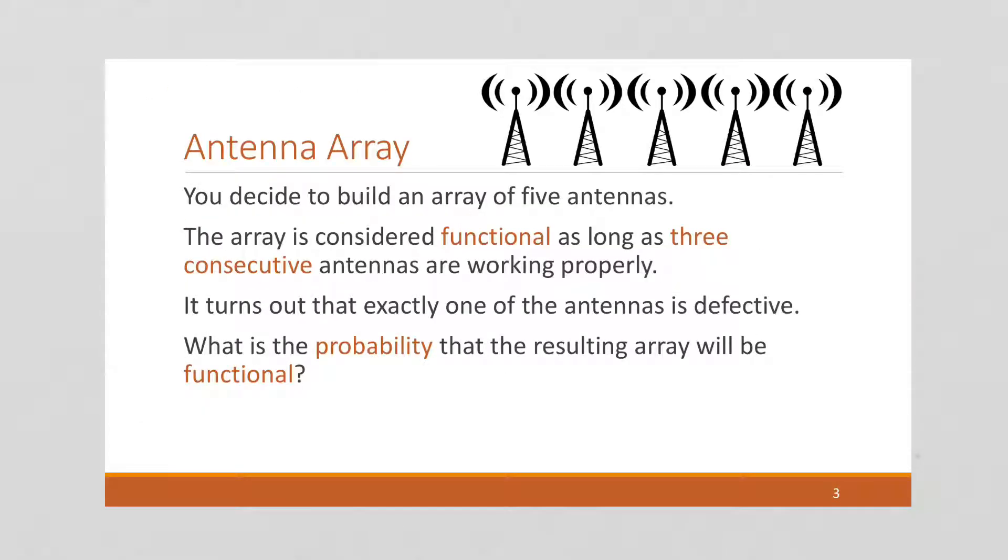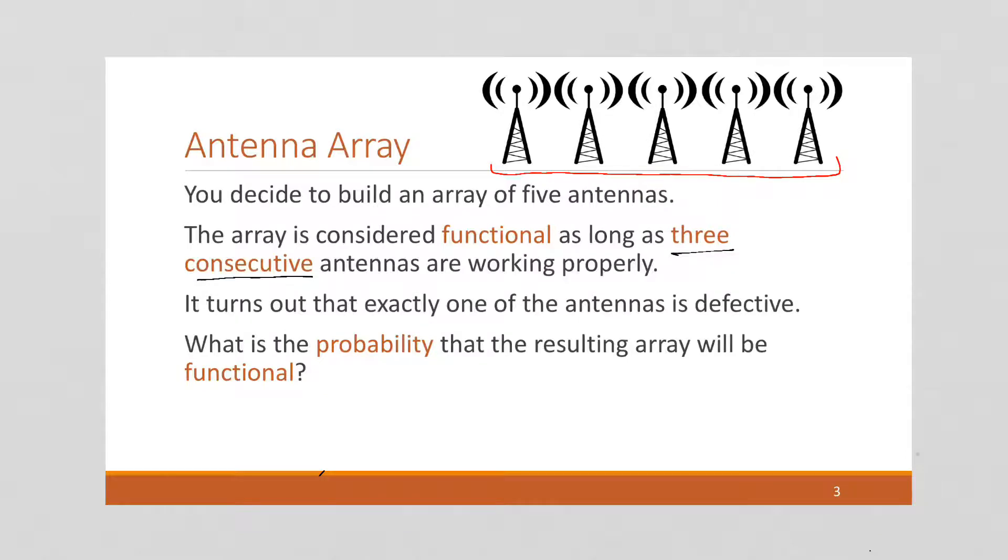Okay, let's try another one. Here is this antenna array, and it's illustrated right here. All right, we have five antennas in a row. And we're going to say this antenna array is considered functional as long as three consecutive antennas are working properly. So if this last one is no longer working properly, then we're still okay because we have more than three in this remaining group of four that are together.